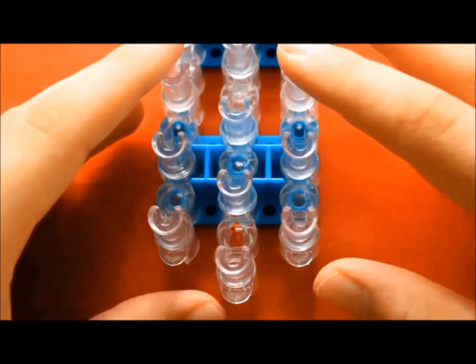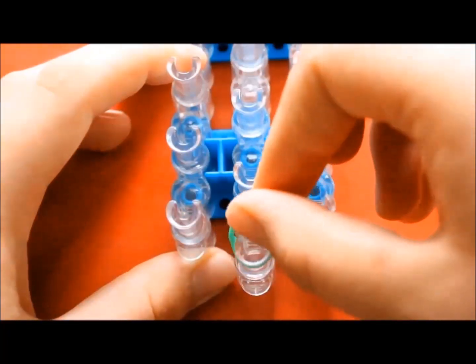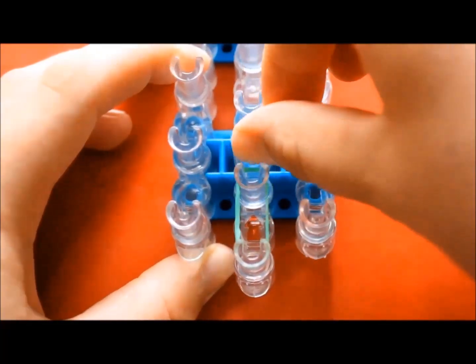Turn the loom so that the red arrow is pointing away from you. Now place your first color on the loom like this.